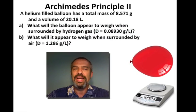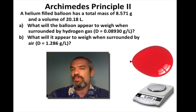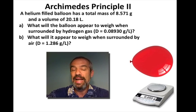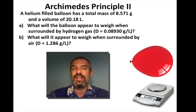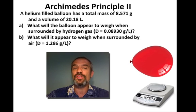A helium-filled balloon has a total mass of 8.571 grams and a volume of 20.18 liters. What will the balloon appear to weigh when surrounded by hydrogen gas? The density of hydrogen gas is 0.08930 grams per liter.